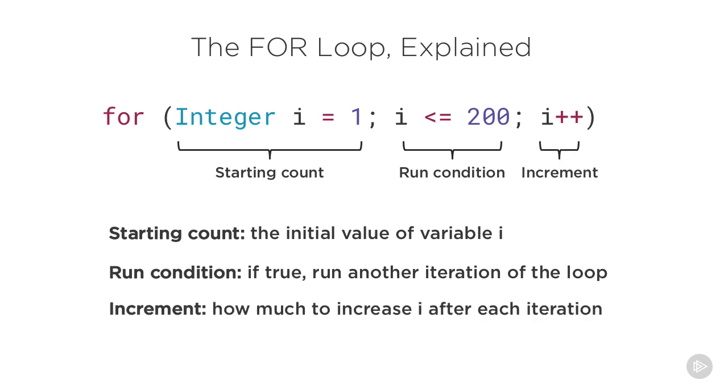Finally, we set the increment. This tells our loop to increment our iteration variable by this amount after each iteration. We type i++ because that's another way of saying add 1 to this value. We could have also typed i equals i plus 1, but you'll normally see it written as i++. It's possible to increment i by more than 1 each iteration, but you rarely see this happen.